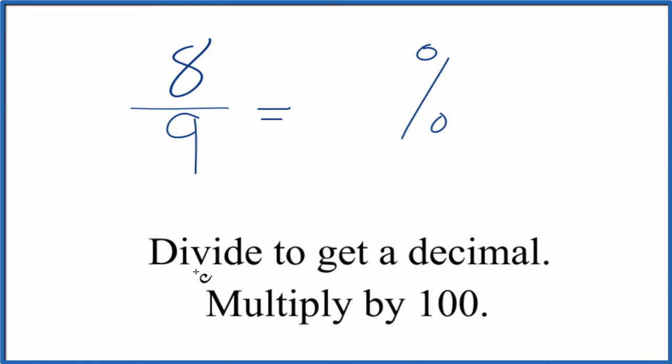The way we do that, we divide eight by nine, and that gives us a decimal. We take that decimal and we multiply by 100. That'll give us the percent for eight ninths.